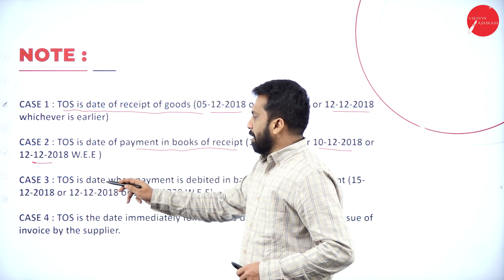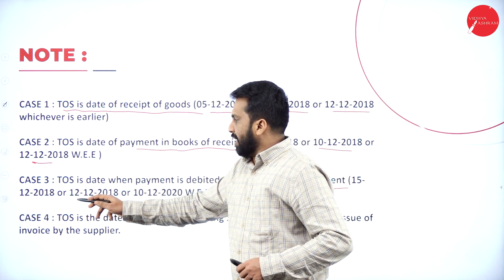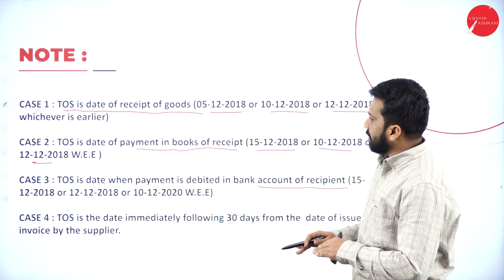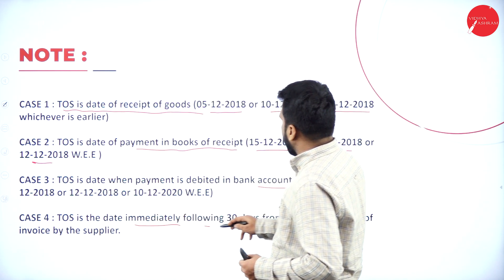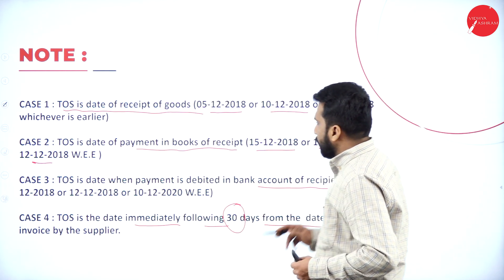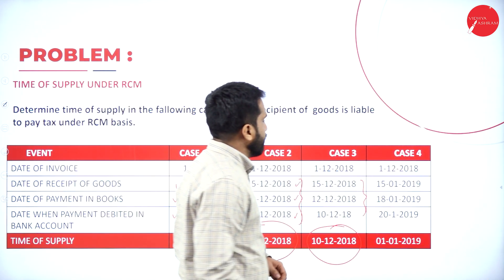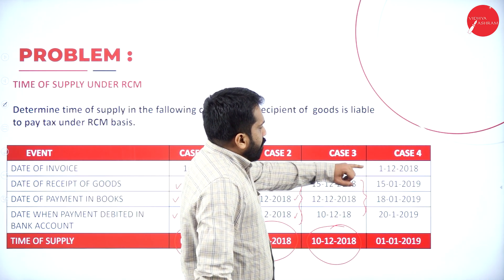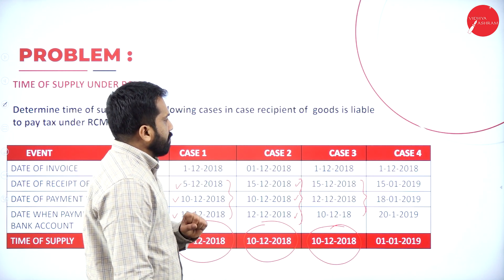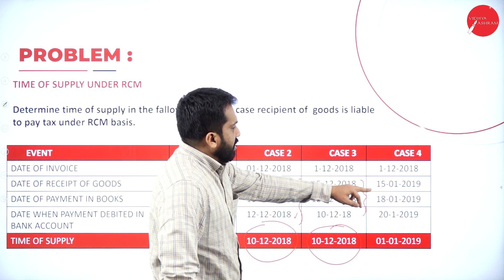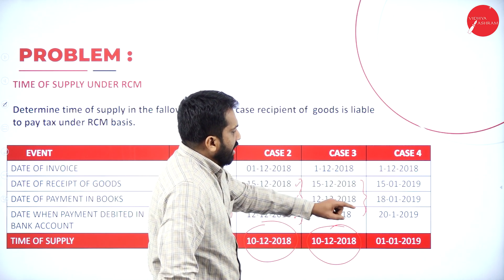For Case 3: the time of supply is the date when payment is debited in the bank account of the recipient — whichever is earlier out of 15-12 and 12-12. For Case 4: the time of supply is the date immediately following 30 days from the date of issue of invoice by the supplier. The invoice is on 1st December 2019, and payment dates are 18th January and 20th January.